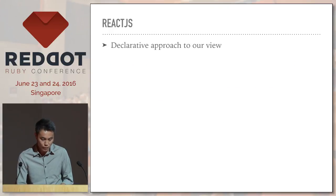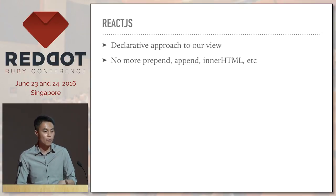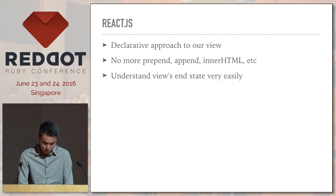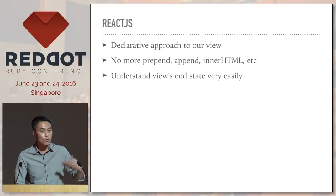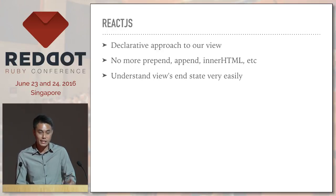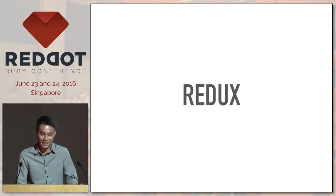This is a very declarative approach — we just describe what the end state needs to look like, and we don't have to care how the DOM is being manipulated. We don't have to do all the trouble of prepending, appending, or changing things here and there, and we can see our view and state very clearly and easily. Moving on, we need to handle a lot of different data and state in our front end, so we use Redux, which is a JavaScript library.